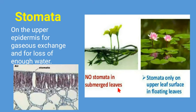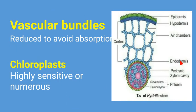In free floating plants, stomata are found on the upper epidermis and are used for gaseous exchange and for the loss of water. In submerged leaves, no stomata are found. Vascular bundles are reduced in hydrophytes — as seen in the example of Hydrilla stem, where xylem is found in the center and phloem outside — and vascular bundles are not well developed.